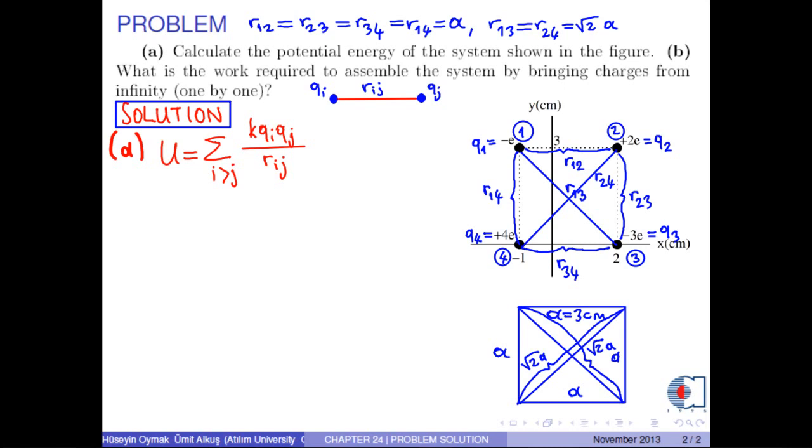So, according to this configuration, the potential energy of the system is obtained as the potential energy between q1 and q2, plus the potential energy between q1 and q3, plus between q1 and q4,